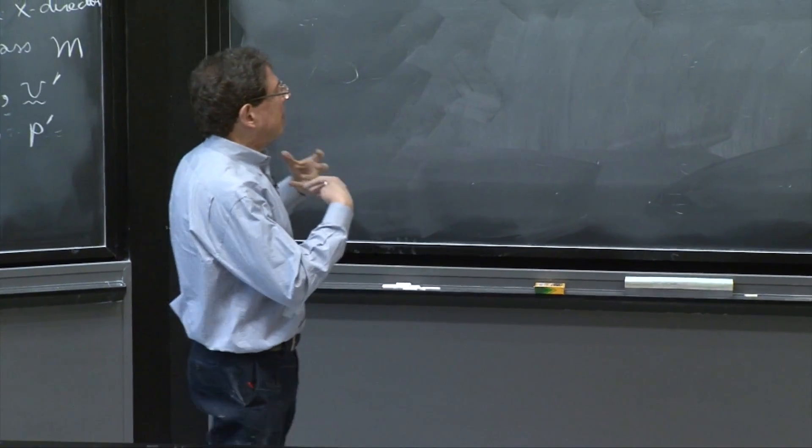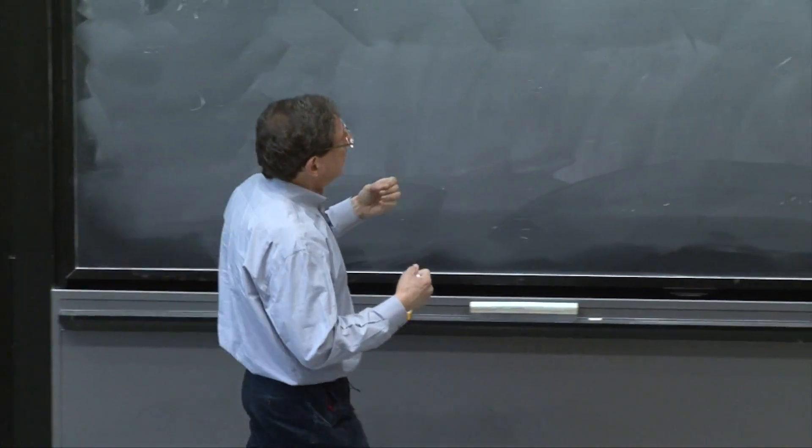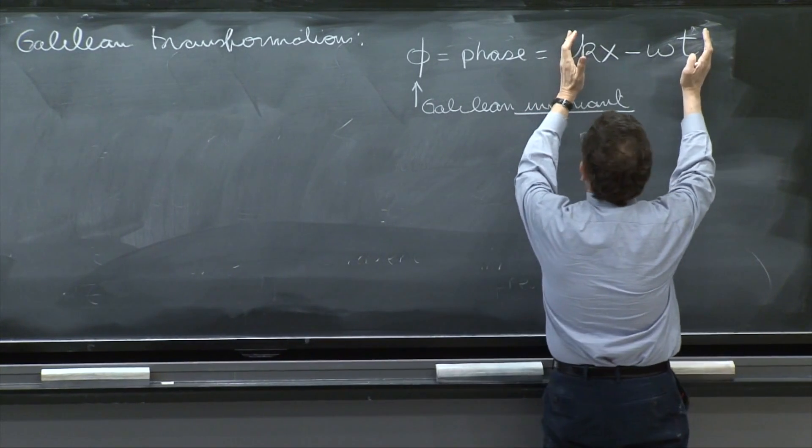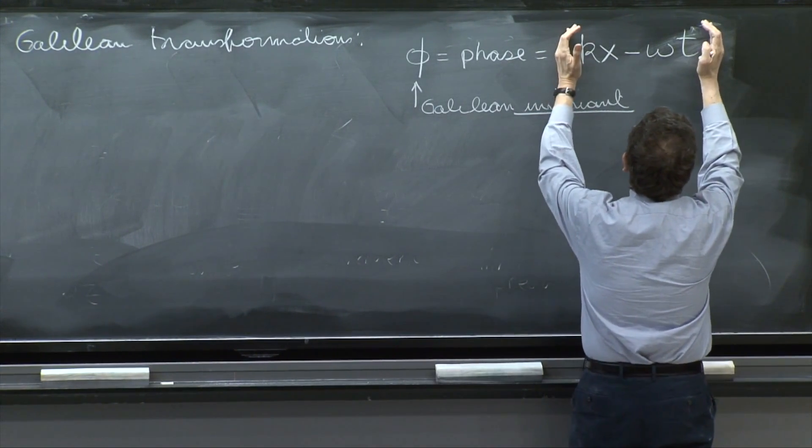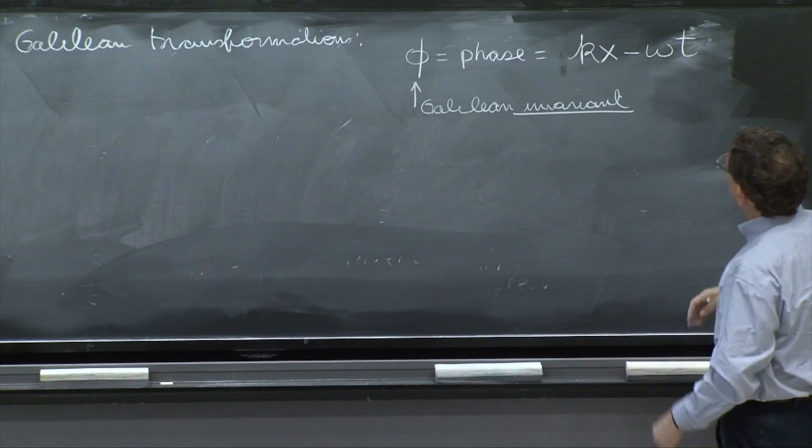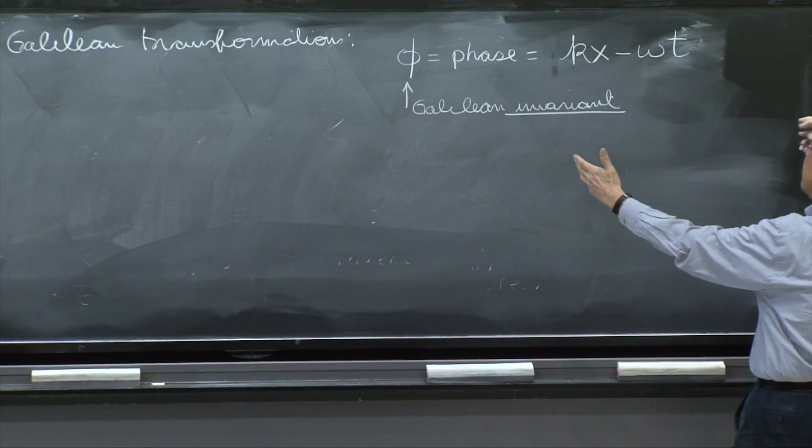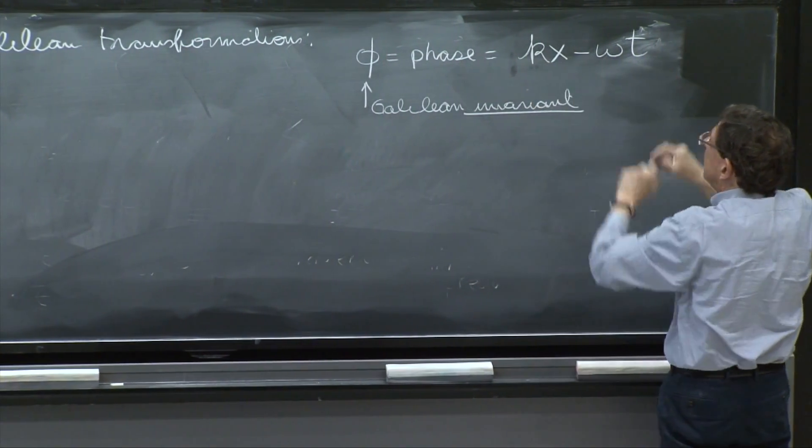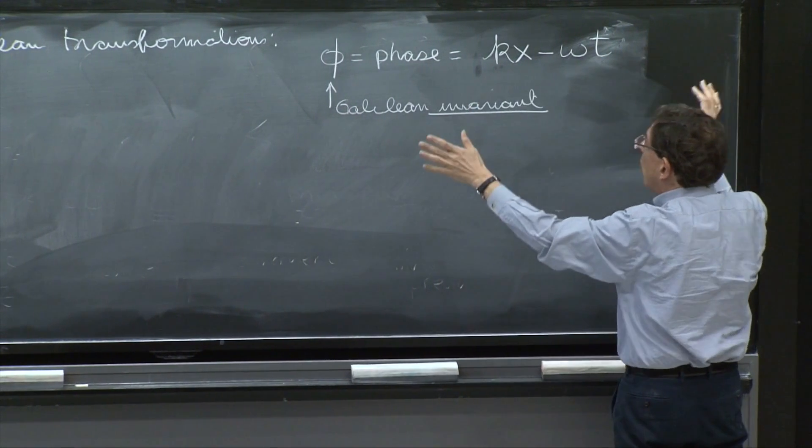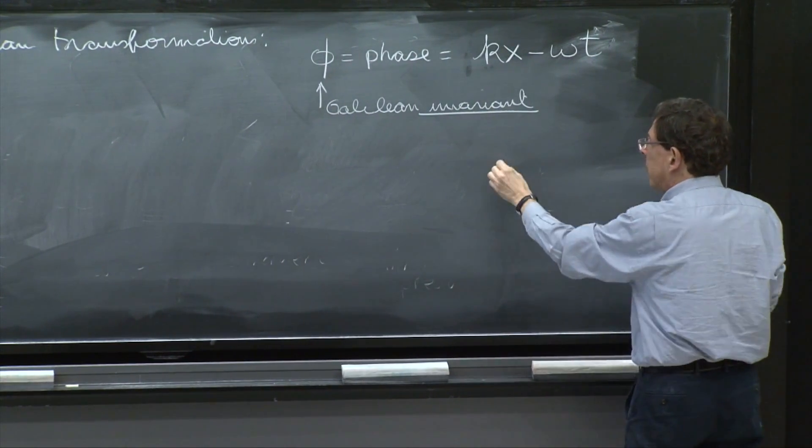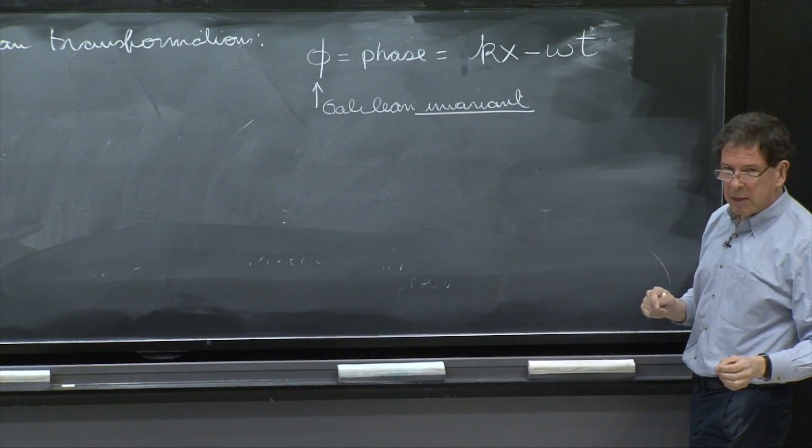Because basically, the reality of the wave is based on the phase. And if you have, for example, cosine of this phase, the place where this cosine is 0 is some value of the phase. And if the cosine is 0, the wave is 0. And everybody should agree that the wave is 0 at that point.